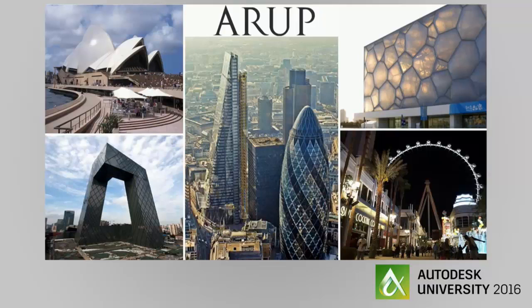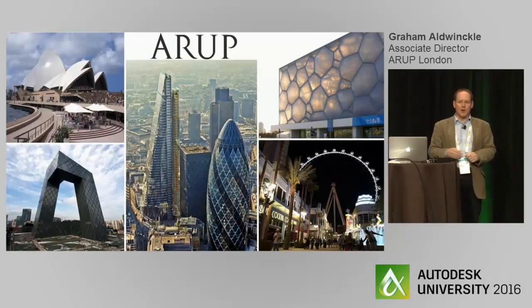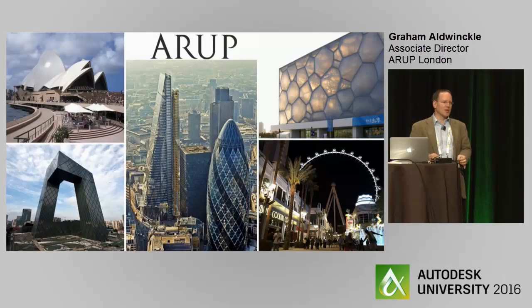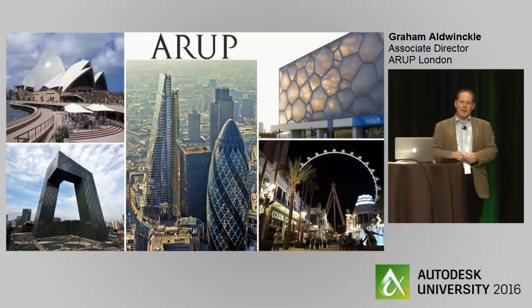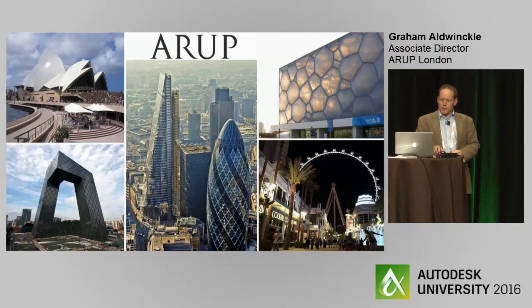This is a flavor of some of the work that we've done in Arup in London, just to give you a feel for what we are using it for as a designer. These are a range of project types — all of them being steel apart from the Sydney Opera House — steel structures that have exposed visible connections predominantly, so we need a way of designing these as quickly and simply as possible.